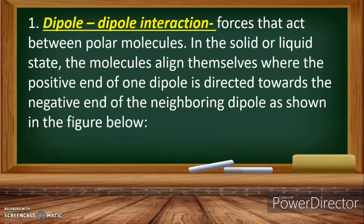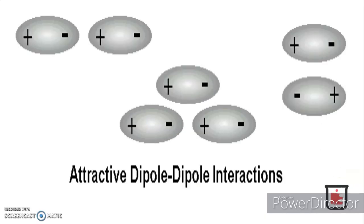These weak intermolecular forces, or Van der Waals forces, are classified as follows. Dipole-dipole interaction: forces that act between polar molecules in the solid or liquid state. The molecules align themselves where the positive end of one dipole is directed towards the negative end of the neighboring dipole. As explained in Lesson 1, intermolecular attraction is the attraction between poles or charges — this is an attractive dipole-dipole interaction.